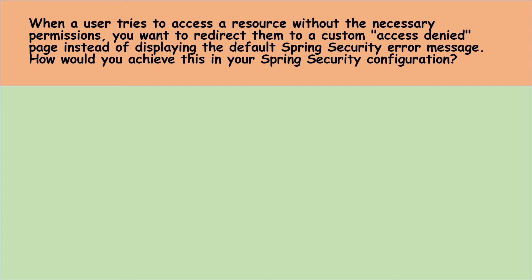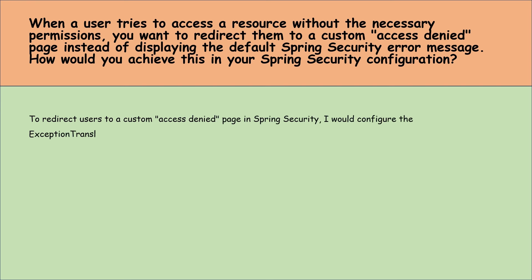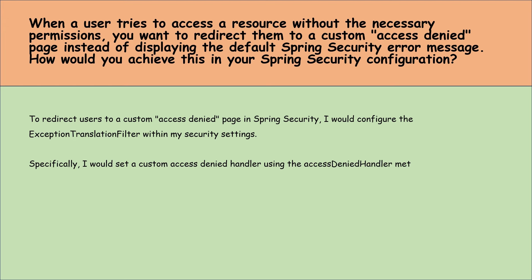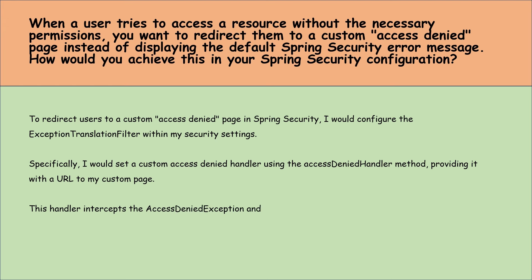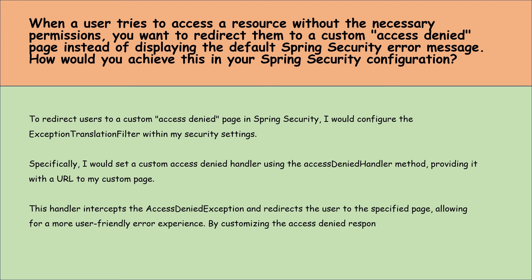When a user tries to access a resource without the necessary permission, you want to redirect them to a custom access denied page instead of displaying the default Spring Security error message. How would you achieve this in your Spring Boot configuration? To redirect users to a custom access denied page, I would configure the exception translation filter within my security settings. Specifically, I would set a custom access denied handler using the accessDeniedHandler method, providing it with a URL to my custom page. This handler intercepts the access denied exception and redirects the user to the specified page, providing a more user-friendly error experience.